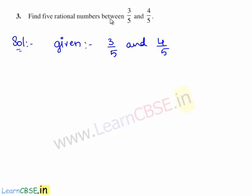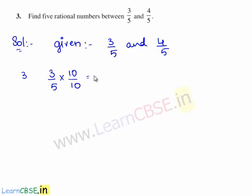To obtain five rational numbers between 3 by 5 and 4 by 5, let us first consider 3 by 5. We shall multiply 3 by 5 with 10 on both the numerator and denominator. This gives 3 times 10 is equal to 30 by 5 times 10 is equal to 50.